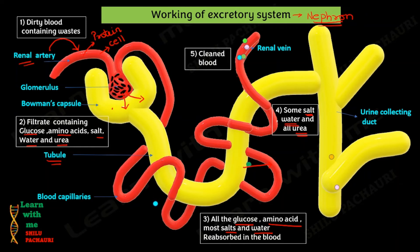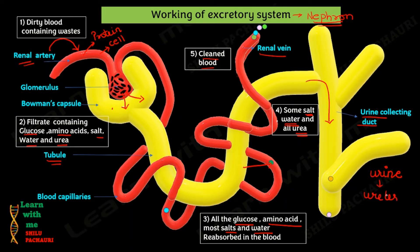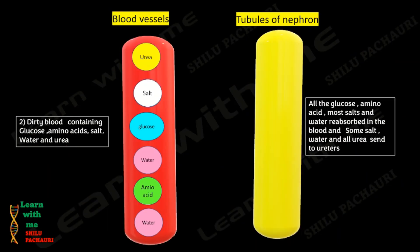The waste substances such as urea, excess salt, and excess water that are not needed by the body enter the urine collecting duct in the form of urine. This is how urine is formed. The useful substances re-enter the blood — that is the cleaned blood — and move through the renal vein to other parts of the body. The urine collected in the collecting duct is then transferred by the ureters to the urinary bladder, and from the bladder it is finally removed from the body through the urethra. This urine contains urea and most of the nitrogenous waste.